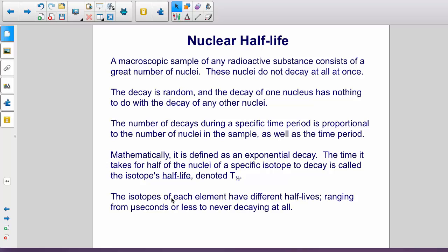The decay is random, and the decay of one nucleus has nothing to do with the decay of any other nucleus. The number of decays during a specific time period is proportional to the number of nuclei in the sample, as well as the time period.